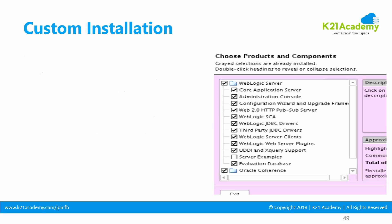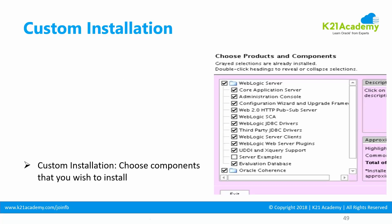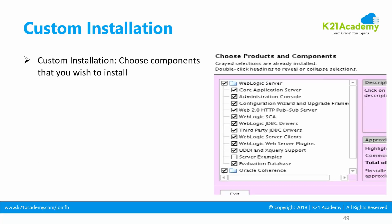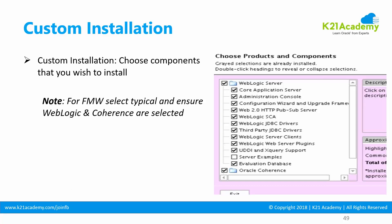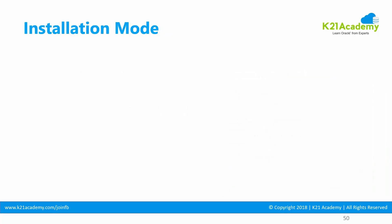So those are the two typical installation types. If you're doing a custom install, you select custom and choose the components you want — you can pick or remove things you don't need. As mentioned earlier, Coherence is mandatory if you're doing a Fusion Middleware product installation.